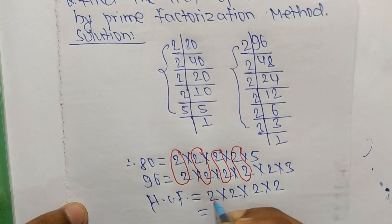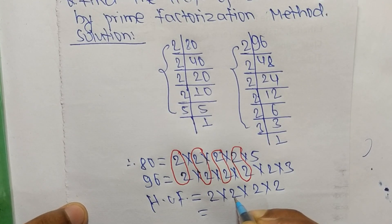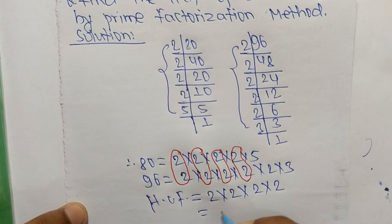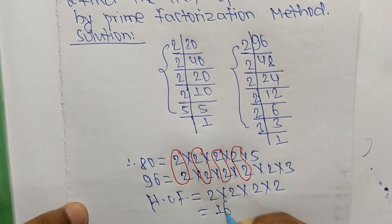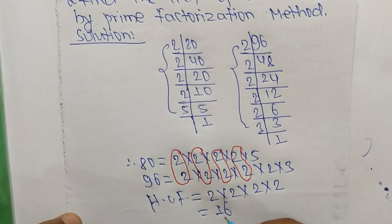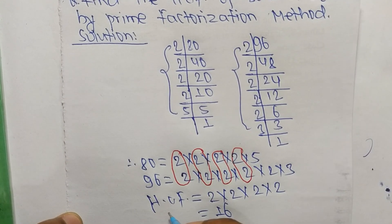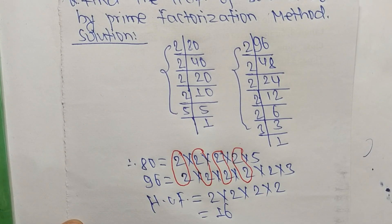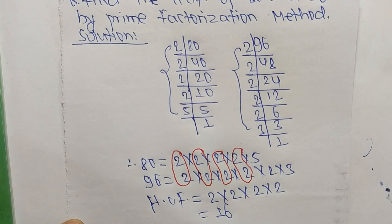So 2 times 2 equals 4, 4 times 2 equals 8, and 8 times 2 equals 16. Therefore, 16 is the HCF of 80 and 96. That's it for today — thanks for watching!